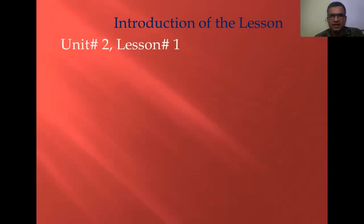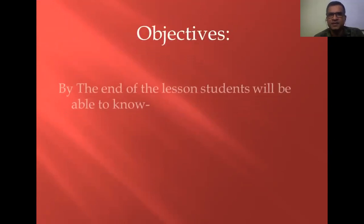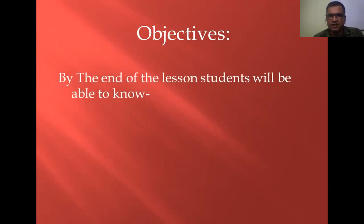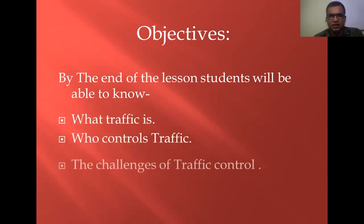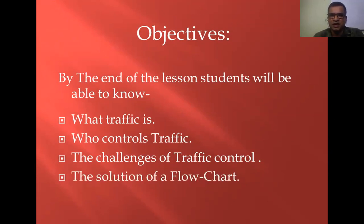You can easily gauge the lesson. I am going to start here. Unit 2, Lesson 1 for Class 11, English First Paper. The topic name is 'How Your Brain Negotiates Traffic.' Objectives or learning outcomes: by the end of the lesson, you, the dear students, will be able to know what traffic is, who controls traffic, the challenges of traffic control, and you will also see a grammatical activity based on English First Paper — that is, a flow chart.